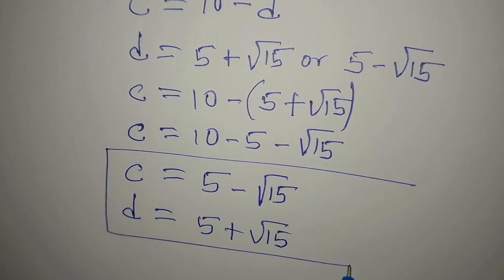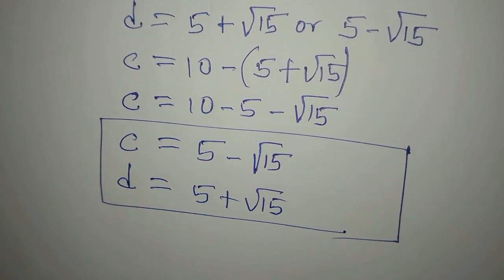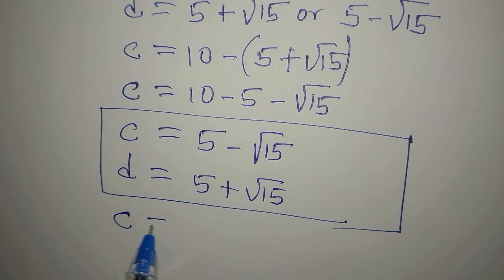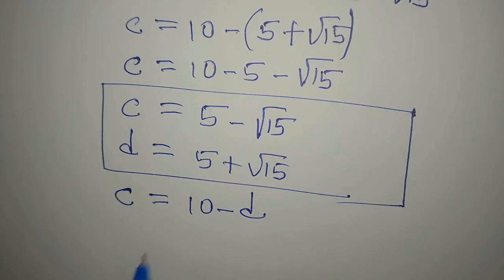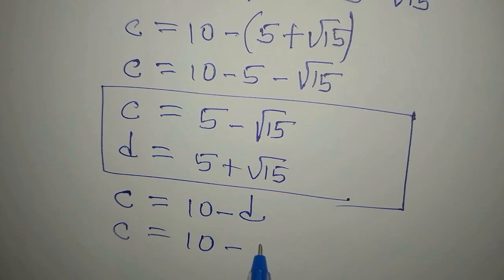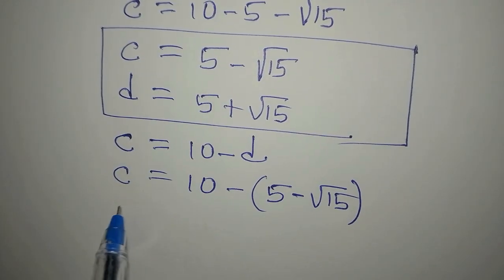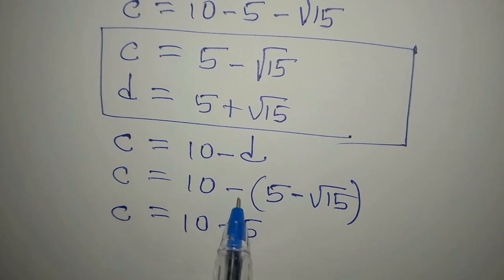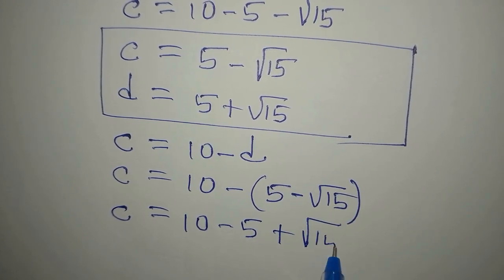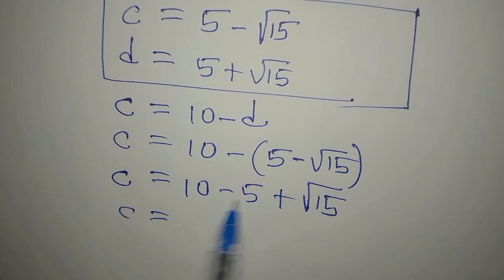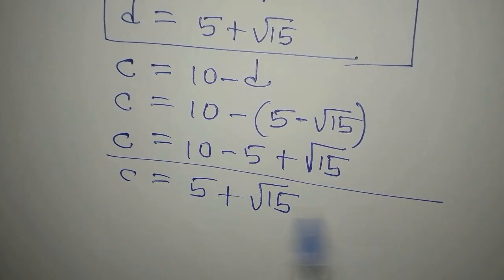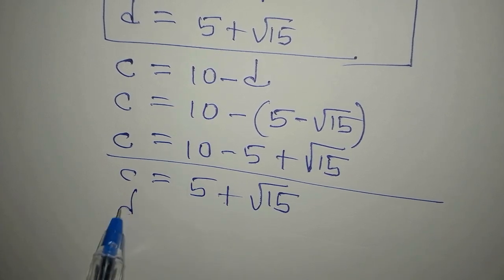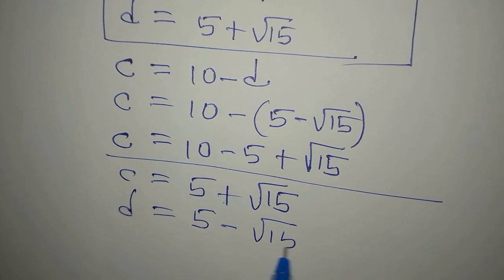For the second value, d equals 5 minus root 15. So c equals 10 minus open bracket 5 minus root 15, which gives c equals 10 minus 5 plus root 15, so c equals 5 plus root 15. Therefore when d equals 5 minus root 15, c equals 5 plus root 15. The problem is now completely solved.